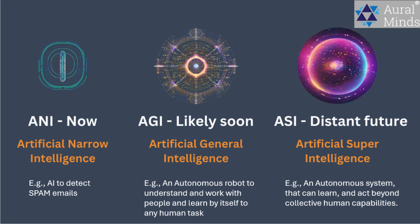AI systems can be categorized into three key types: ANI, AGI, and ASI. Artificial narrow intelligence, ANI, focuses on specific tasks.